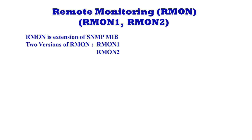RMON2 is an extension of RMON that focuses on higher layers of traffic above the Media Access Control, i.e. MAC layer. RMON2 has an emphasis on IP traffic and application level traffic, and allows network management applications to monitor packets on all network layers. This is different from RMON version 1, which only allows network monitoring at the MAC layer and below.